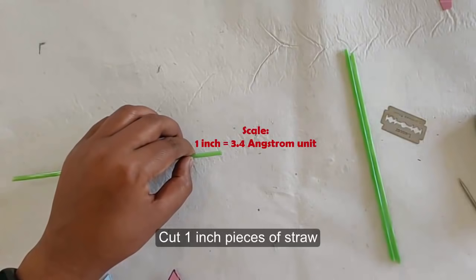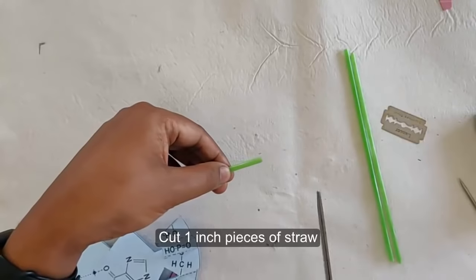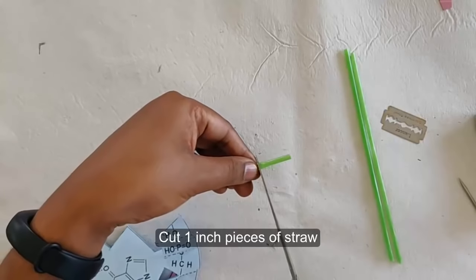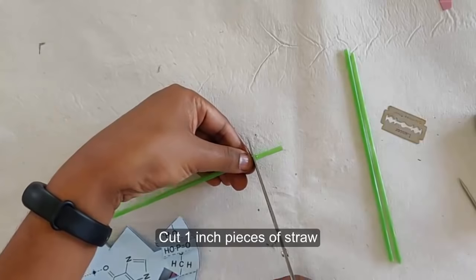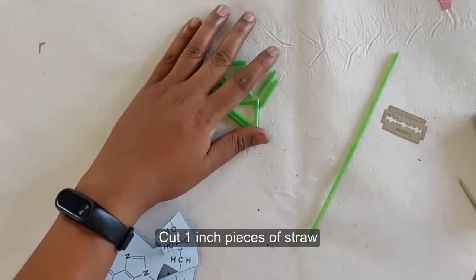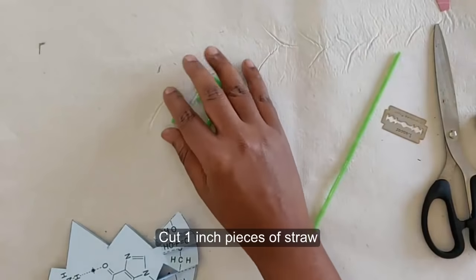Now make 1 inch pieces of this straw so that we can use them further as a spacer. Here our spacers are ready.